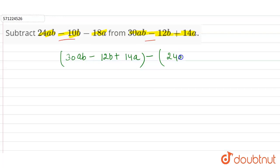24ab from this, 24ab minus 10b minus 18a. So if there is a subtraction sign outside the bracket, the sign of all the terms inside the bracket got changed.